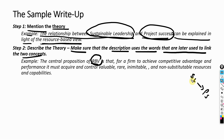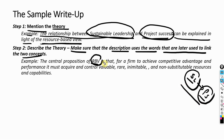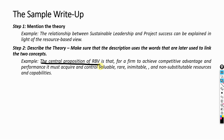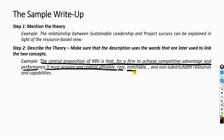How would I know which description to use? As mentioned previously, clearly identifying the elements of the concepts is key. Once you identify the key elements, you will be able to identify the proper description of the theory that can be used to link the two. In this case, the example is: the central proposition of RBV is that for a firm to achieve competitive advantage and performance, it must acquire and control valuable, rare, inimitable, and non-substitutable resources and capabilities.